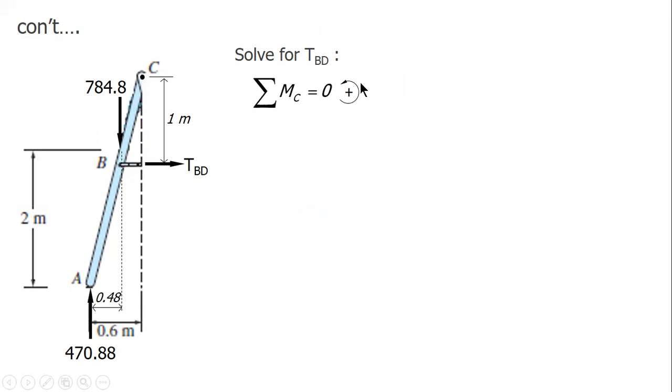Let's sum up moment at C to solve for BD. Again, counterclockwise direction positive. TBD times perpendicular distance or moment arm of 1 counterclockwise, plus 784.8 counterclockwise also about point C, and then RA clockwise about point C.